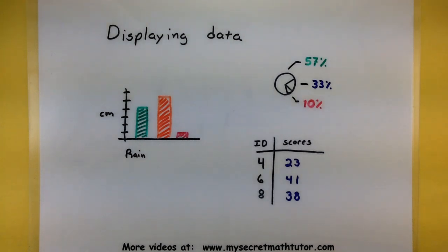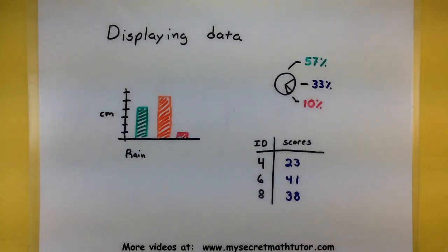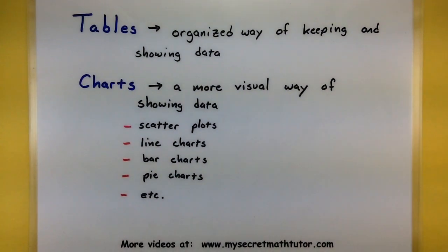One huge part of statistics is all about displaying the data you have. In this video we're going to talk about two of the main ways that we can go about displaying those actual data values. The two main ways we can use are tables and charts.